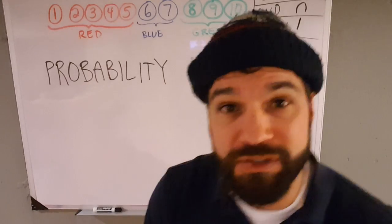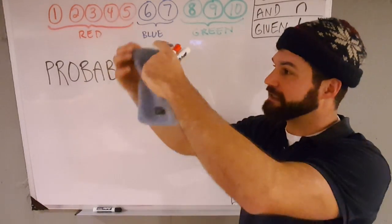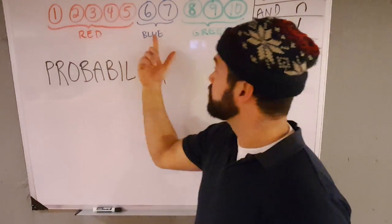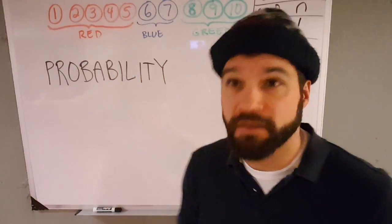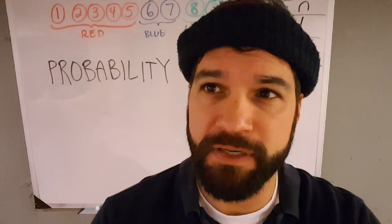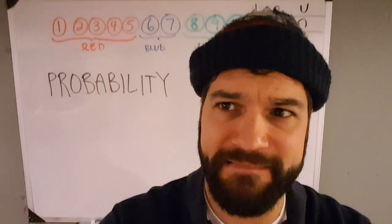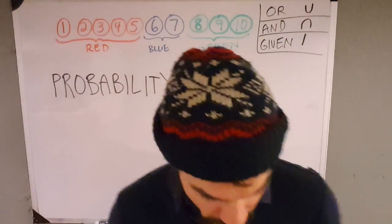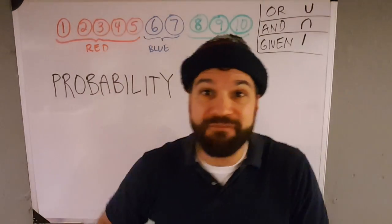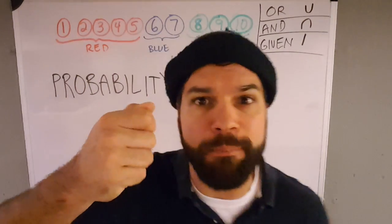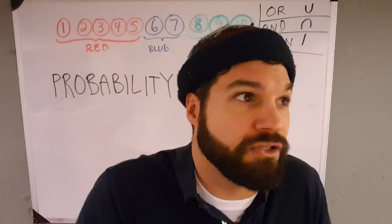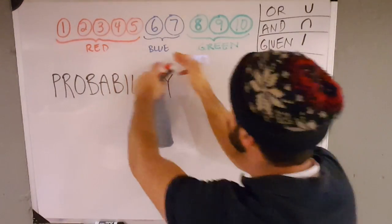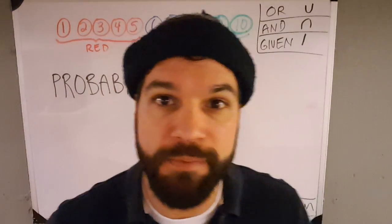So let's talk about some basics. Suppose I had a little satchel like this, and inside I had some chips — some poker chips — colored red, blue, and green. I had 10 chips in the bag. And I was wondering, hey, if I reach in randomly and I pull out a chip, what's the likelihood the chip has these qualities? We have five red, two blue, and three green — 10 chips altogether.